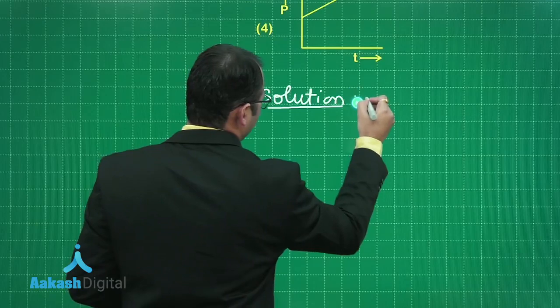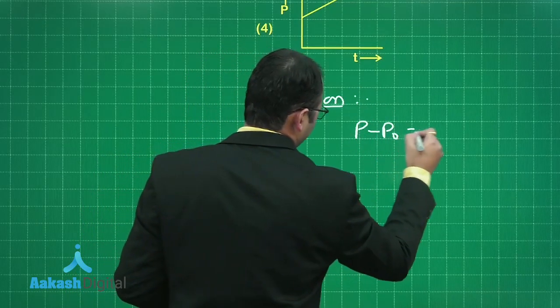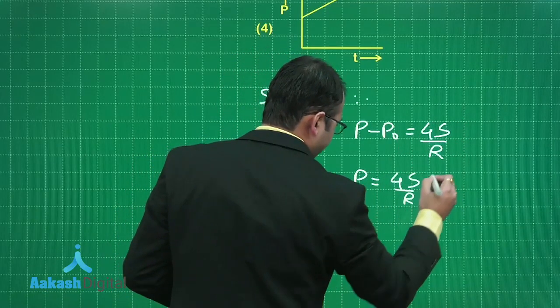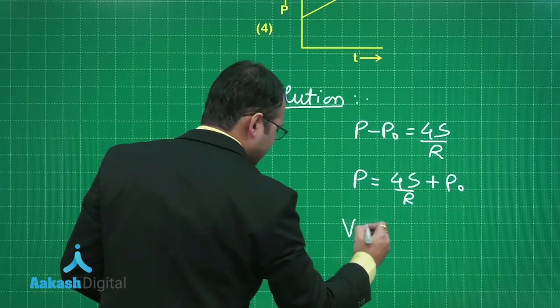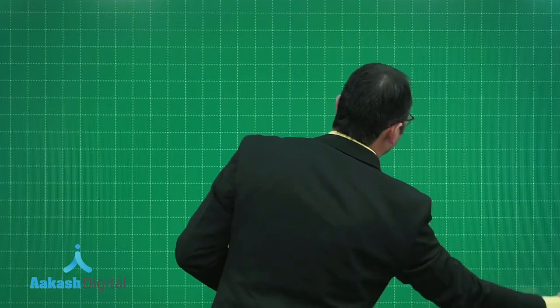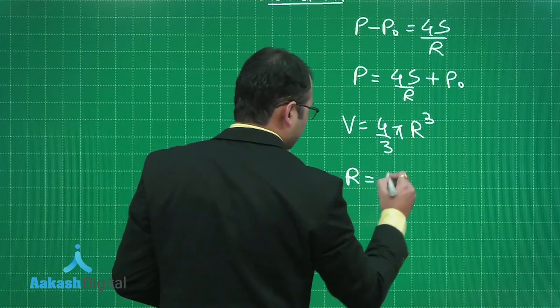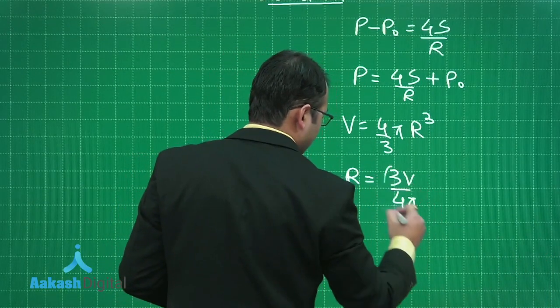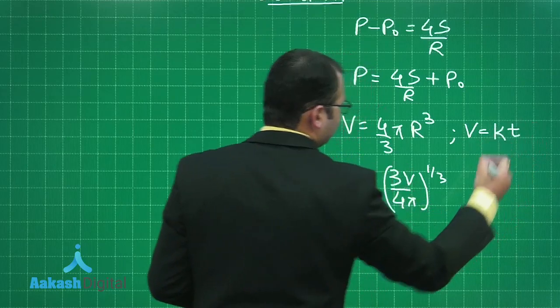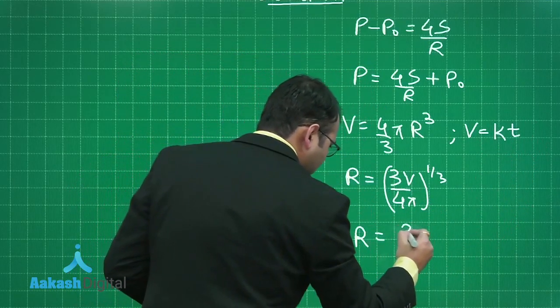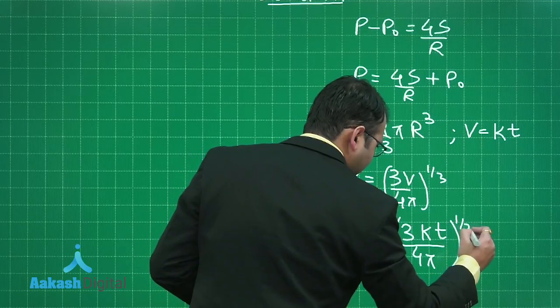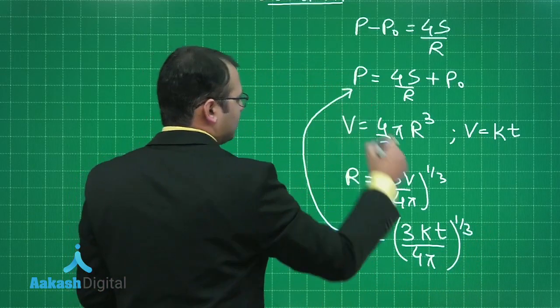For any bubble, since bubble has two surfaces, you can write P minus P₀ equals 4s by r, so pressure will be written as 4s/r plus P₀. Volume equals 4 by 3 π r³, so from here you can write r equals (3V/4π)^(1/3). Also volume was holding a relation with time, so let's take it as kt. So r can be written as (3kt/4π)^(1/3).